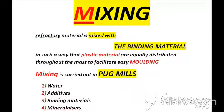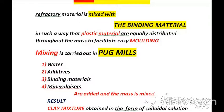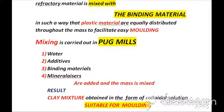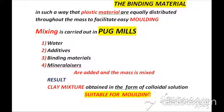The next step is mixing. Refractory material is mixed with binding material such that plastic materials are equally distributed throughout the mass to facilitate easy molding. Mixing is carried out in pug mills, where water, additives, binding materials, and mineralizers are added and the mass is mixed. As a result, a clay mixture is obtained in the form of a colloidal solution suitable for the molding process.